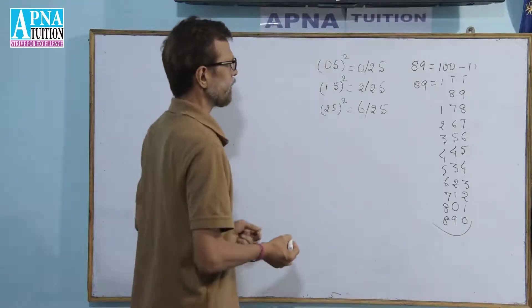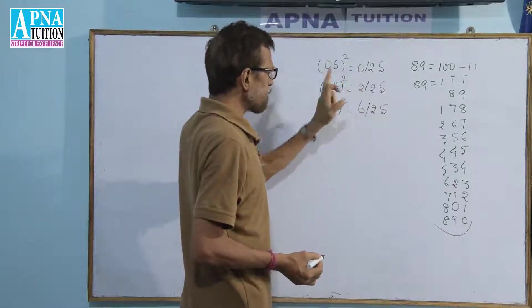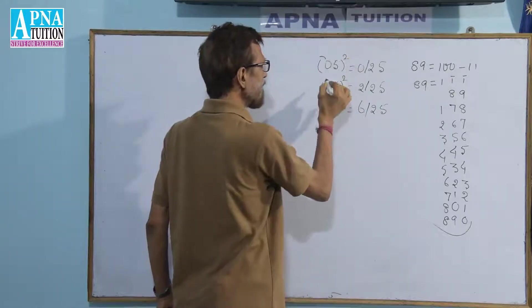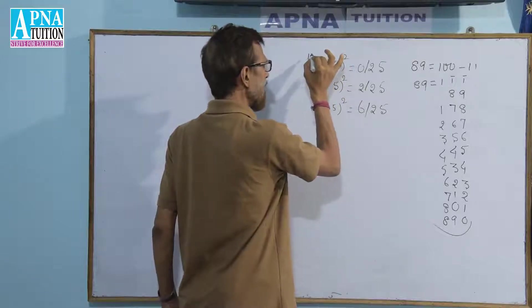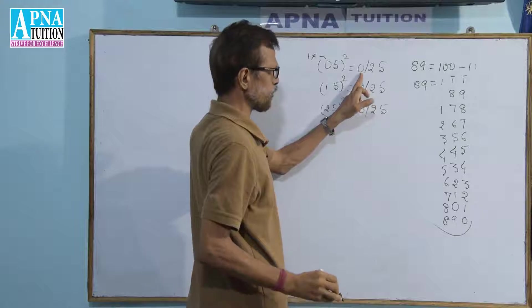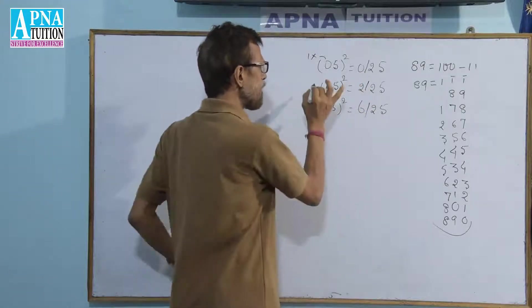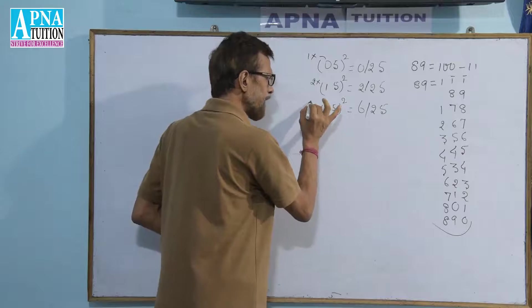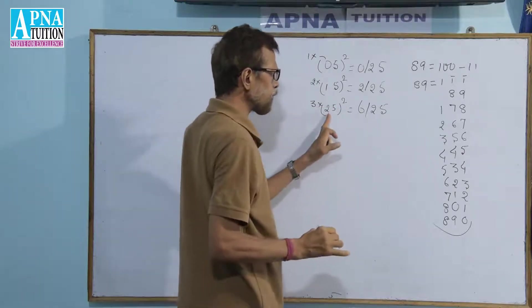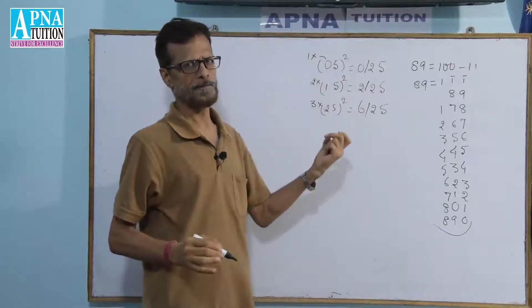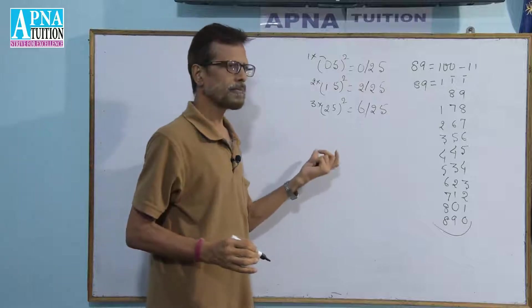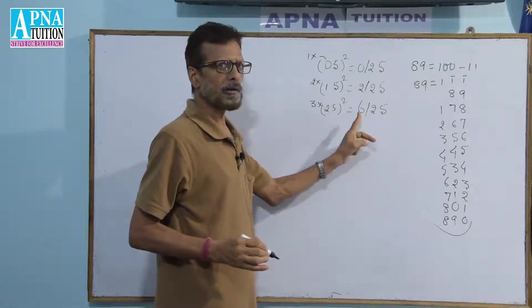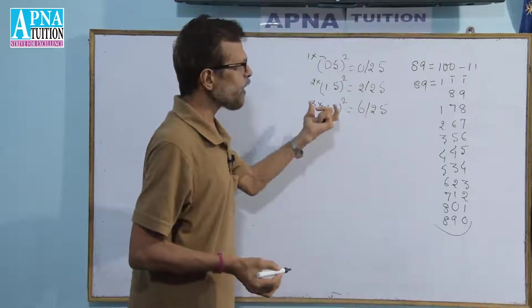Secondly, when the tens digit is 0 we have 0; when it is 1 we have 2; when it is 2 we have 6. That is, if the tens digit is increased by 1, then multiplied by the original tens digit, we get the leading digits. So the pattern is: tens digit × (tens digit + 1) forms the hundreds place onward, and 25 is always copied as the last two digits.